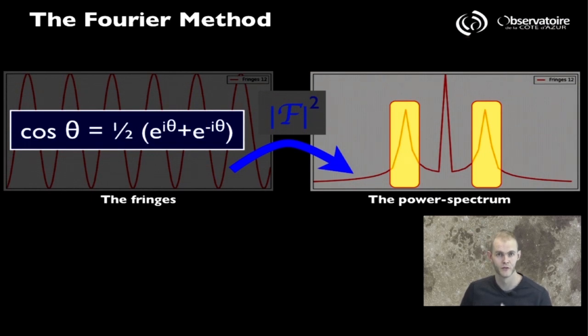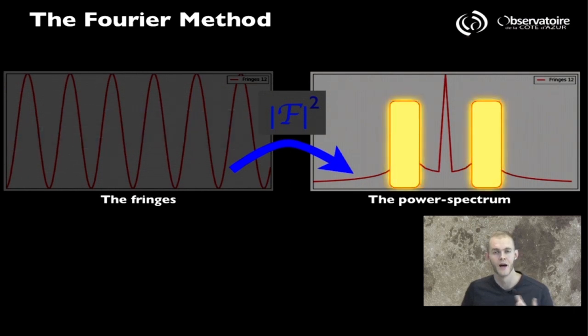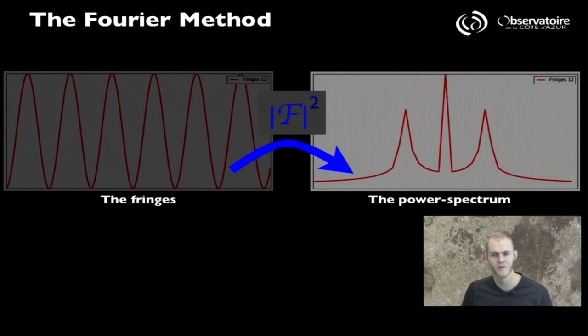The reason why you observe two side lobes in the Fourier transform is simply because of some mathematical properties. A cosine function can be thought of as the sum of two complex exponential functions, one with a positive sign and one with a negative sign, that place the two peaks on either side of our central peak.